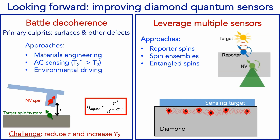Moving forward in terms of improving sensitivity, we need to battle decoherence. Near the surface we have decoherence, which is one of the primary culprits of reduced sensitivity as we try to bring our NV sensors very close to our sample. One way to address that is through materials engineering. Another simple way is to do AC sensing — effectively use a lock-in technique, measuring the drive current at a particular frequency and locking into that frequency to separate ourselves from DC noise. We've done that and already gained a big improvement. Another approach we'll discuss is driving the environment, and later, leveraging multiple sensors.